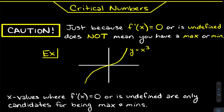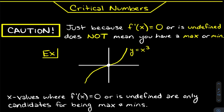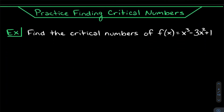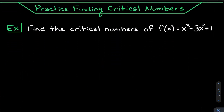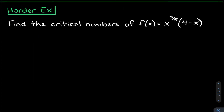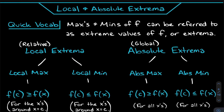To find critical numbers, we set the derivative equal to zero and solve for x. After a couple of examples there, we'll move on to local and absolute extrema.